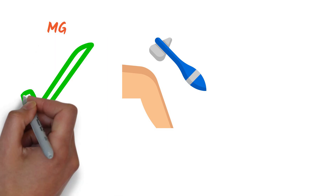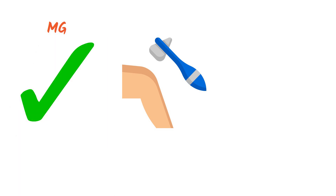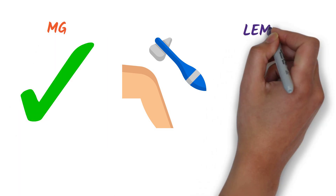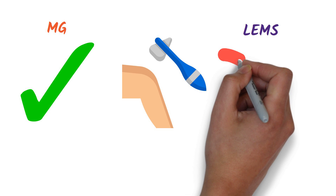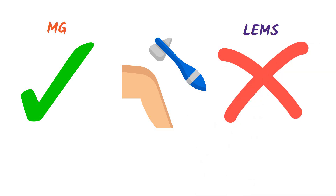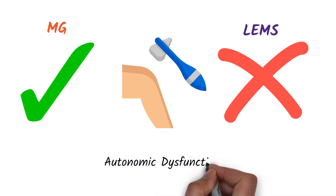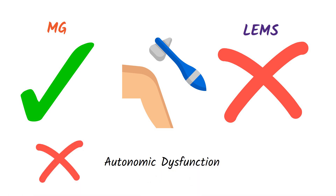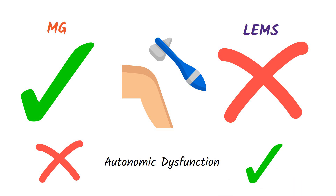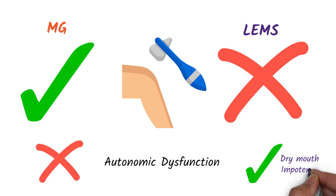In Myasthenia Gravis, deep tendon reflexes are not affected. Lambert-Eaton Myasthenic Syndrome leads to absent deep tendon reflexes. Myasthenia Gravis does not cause autonomic disturbances, but Lambert-Eaton Myasthenic Syndrome can lead to autonomic dysfunction such as dry mouth and impotence.